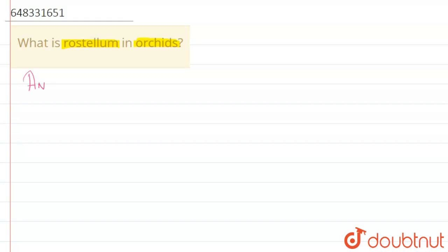So the answer is: rostellum is a projected portion of orchids which generally separates.